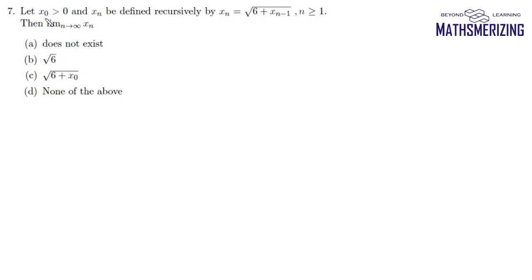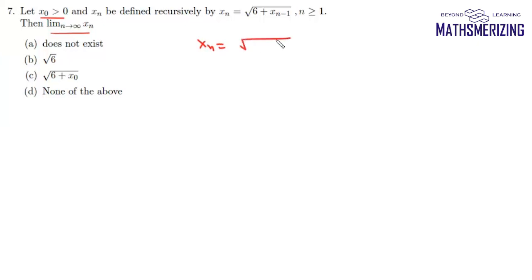Question number seven: let x₀ be greater than zero and xn be defined recursively by xn equals the square root of six plus xn minus one, where n is greater than or equal to one. Then the limit as n tends to infinity of xn is? We can write xn as the square root of six plus xn minus one.